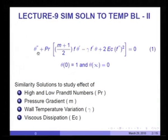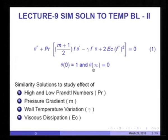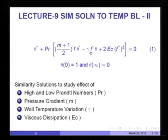We will now look at solutions to the similarity temperature boundary layer equation. The equation is theta double prime equal to Prandtl number into (m plus 1)/2 times f theta dash, minus gamma f dash theta, plus 2 Ec f double prime zero squared, equal to zero, with boundary conditions theta(0) equal to 1 and theta(infinity) equal to zero.